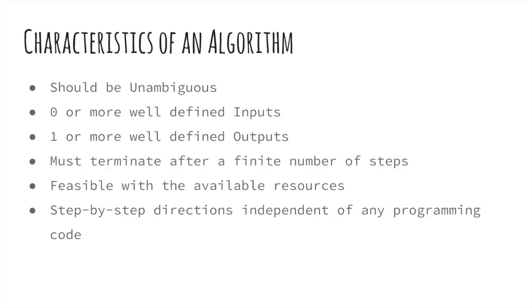But not any procedure can be denoted an algorithm. An algorithm should have a set of characteristics, which are listed on this slide. First of all, an algorithm should be clear and unambiguous. Each of its steps, or phases, and the inputs and outputs should be clear and must lead to only one meaning.